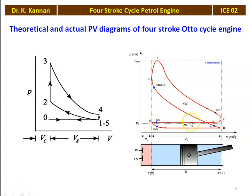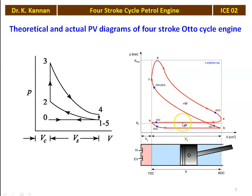This is the actual P-V diagram, with the piston reciprocating between the bottom dead center and the top dead center. The deviation from theory is that the suction process occurs at lower than atmospheric pressure, whereas in theory it is at constant pressure. The exhaust process occurs at higher than atmospheric pressure inside the engine cylinder. P₀ is the surrounding atmospheric pressure, and the combustion is not exactly constant volume — there is slight deviation. There is also a slight change in the blow down operation.